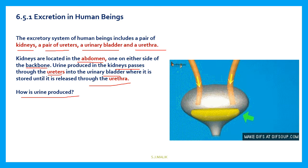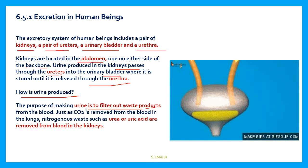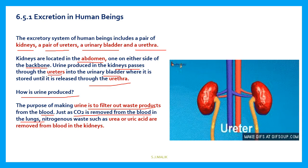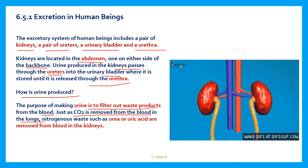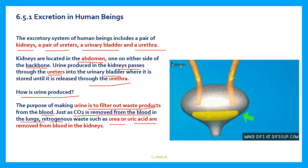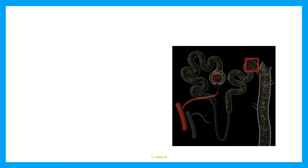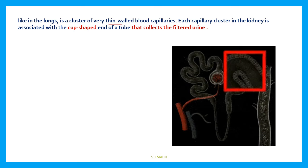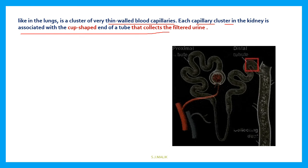The question is: how is urine produced? The purpose of making urine is to filter out waste products from the blood, just as CO2 is removed from the blood in the lungs. In the same manner, nitrogenous substances are removed from the body through urine, in the form of urea or uric acid. The basic filtration unit in the human body is the kidney. Like in the lungs, there is a cluster of very thin-walled blood capillaries. Each capillary cluster in the kidney is associated with the cup-shaped end of a tube that collects the filtered urine.